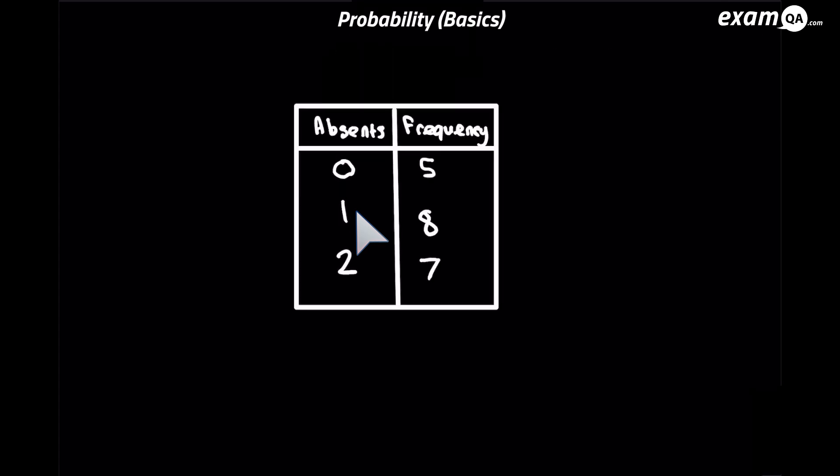Okay, so this is going to be our last example. Here we've got a frequency table talking about absence. So we've got a class of 20 students. And they either had zero absence, one absence, or two absences. Now the question is, what is the probability of finding someone who's only had one absent day?